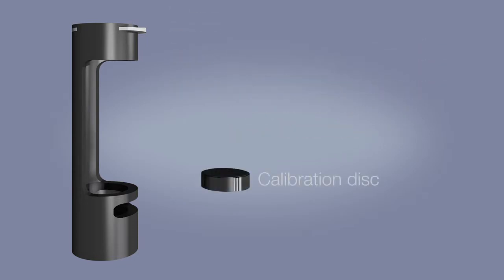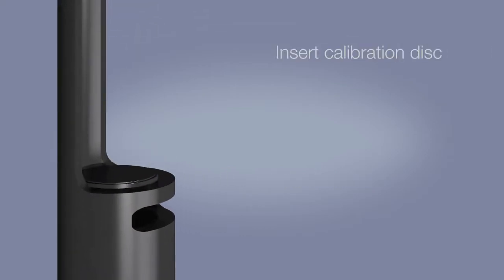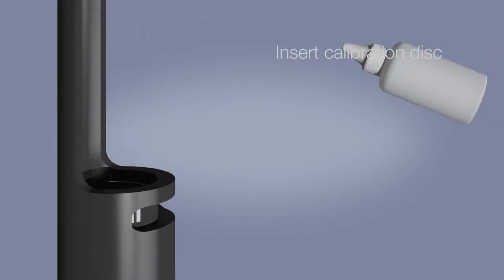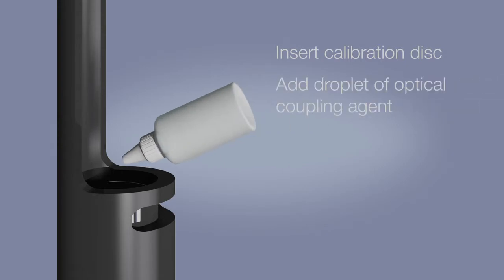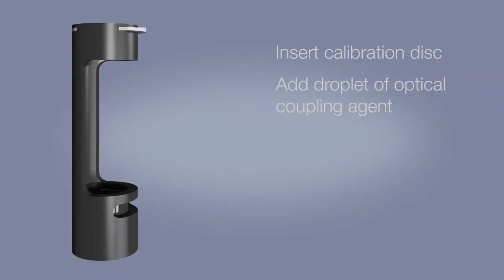Each kit is provided with a range of different calibration discs that have been factory calibrated against primary turbidity standards. Simply place the appropriate calibration disc into the holder, add a small droplet of the optical coupling agent, and insert into the holder.